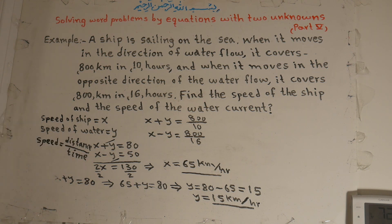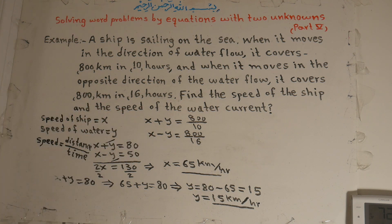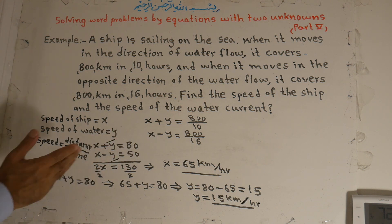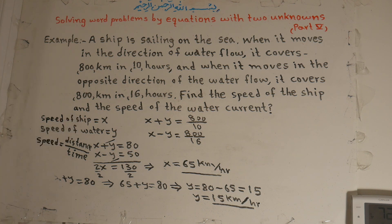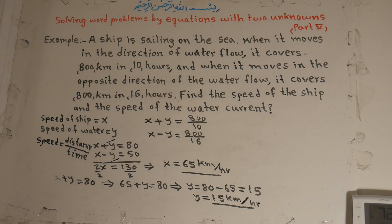Speed is equal to distance over time — this is the formula from physics. So x plus y equals 800 km over 10 hours, that is the combined speed. And x minus y equals 800 over 16 hours. This gives x plus y equals 80 and x minus y equals 50. These are linear equations with two unknowns. Adding them: 2x equals 130, so x equals 65 kilometers per hour — that is the speed of the ship.